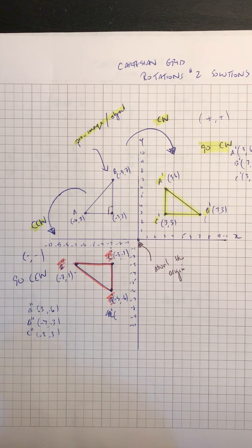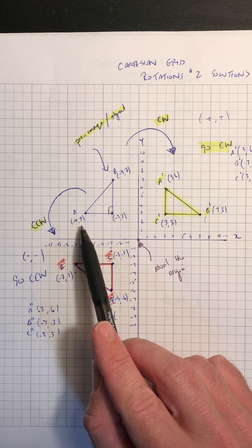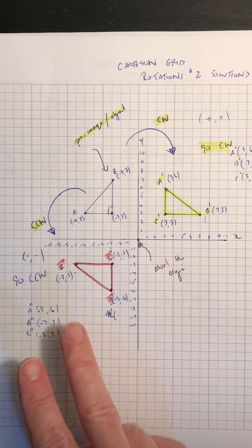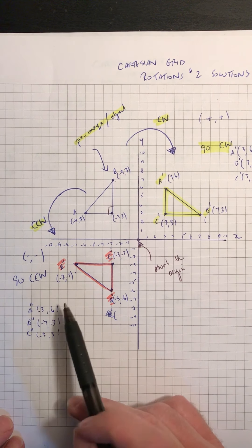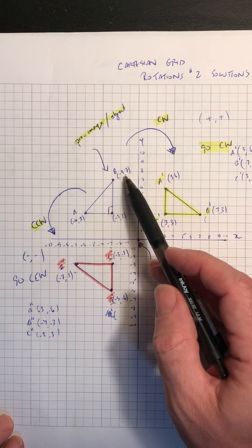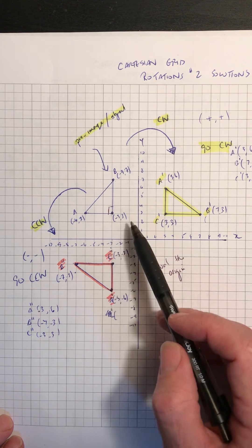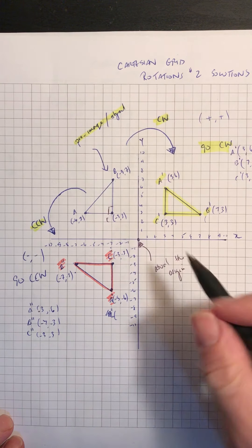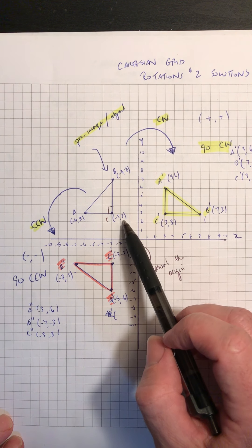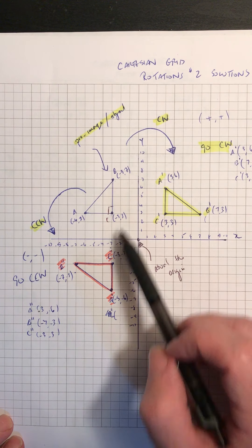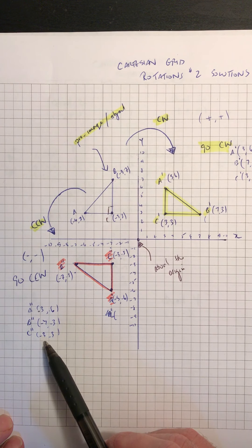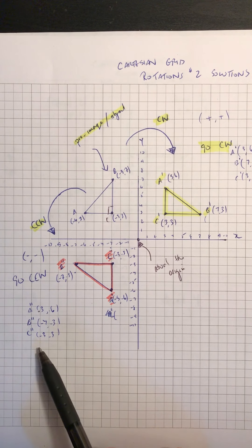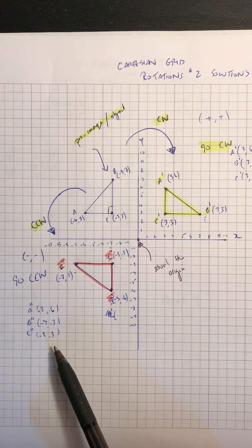Again, same thing. When we look to the original pre-image and the ordered pair for A was 6 and 3, we're going to flip it and now we've got 3 and 6. What was 3 and 7 is now 7 and 3. We flip them. It's the same number, so it's the same thing. We just have to have a negative sign to each one. So those are the solutions for rotations.